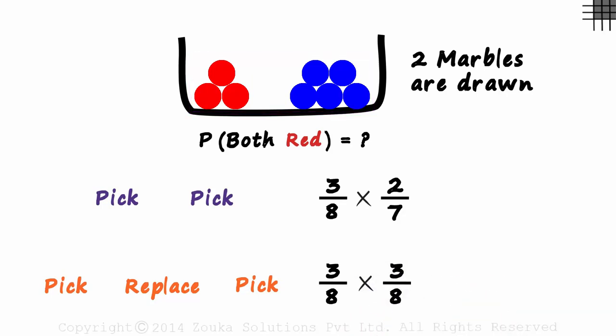We can clearly see the difference. In the first case, the second event is dependent on the first one. And in the second case, the second event is independent of the first one.